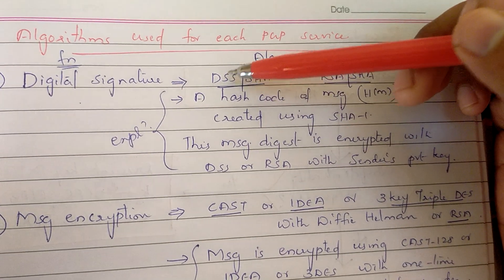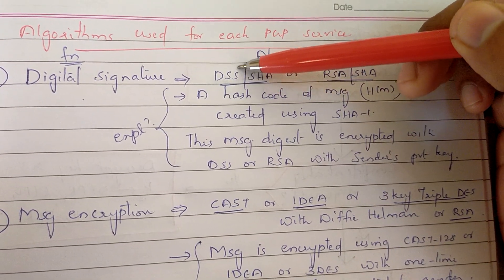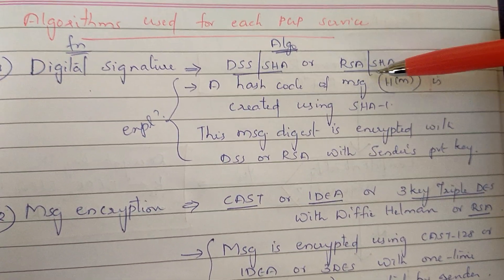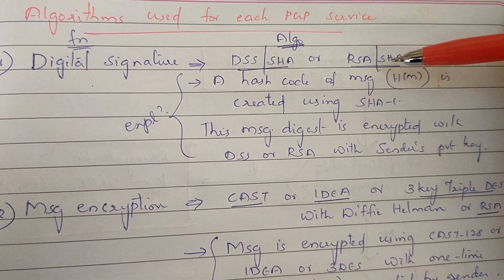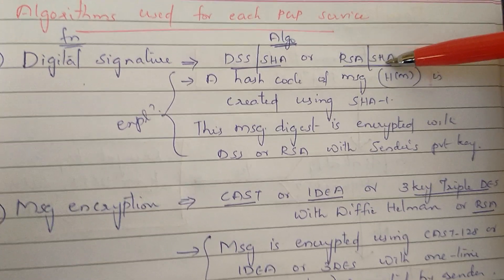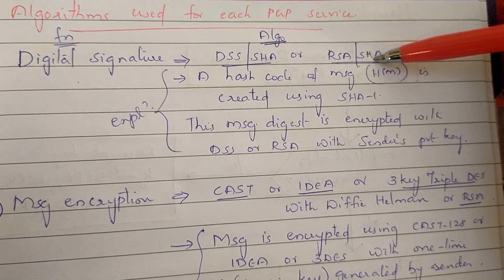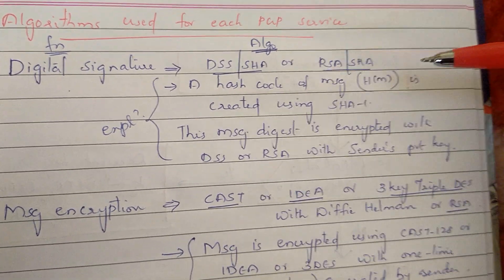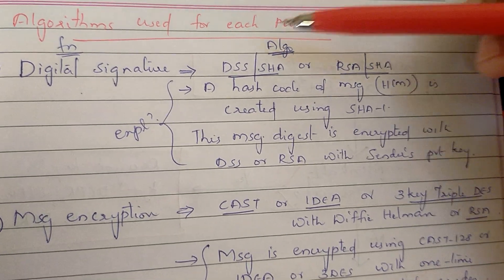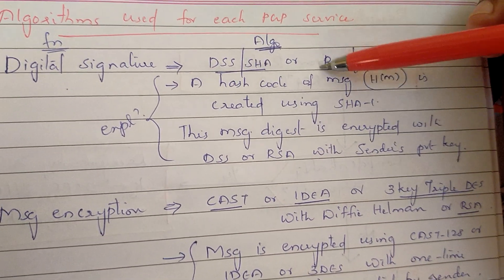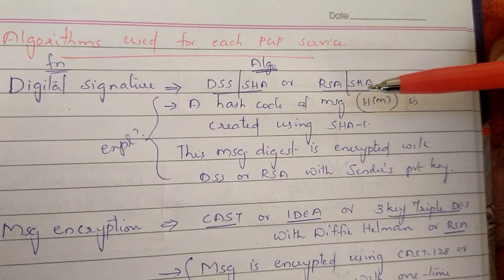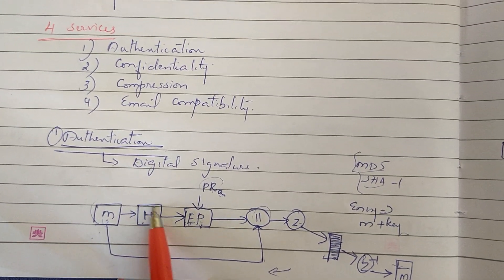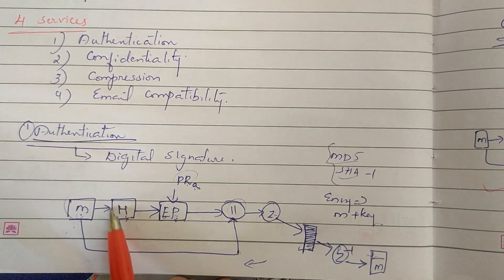The algorithm used for the hashcode is called the Secure Hash Algorithm (SHA). We generate a hashcode known as the message digest. We then encrypt this hashcode using the RSA algorithm with the sender's private key.